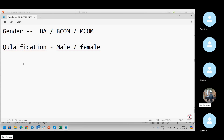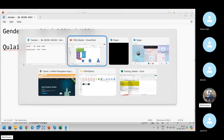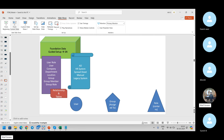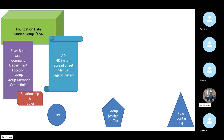Gender must contain values like Male and Female, and qualification must contain BA, BCom, and MCom. You know this from your own understanding. In the same manner, when we implement ServiceNow, we need to see what values are coming in each field — because foundation data is what helps us drive the process. For example, in a category field we might see hardware, software, network, or database issues. Before you implement any platform, your foundation data is required to run that system.